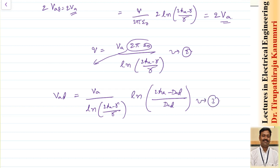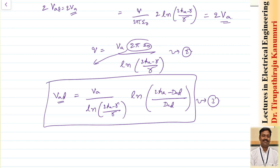This is the potential difference between conductor A and conductor D, or the potential of conductor D due to the effect of conductor A. Similarly, I can calculate the effect due to B and C. So the total potential in conductor D will be equal to V_AD plus V_BD plus V_CD.